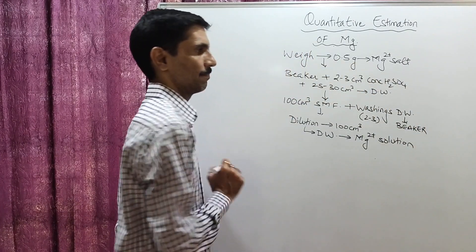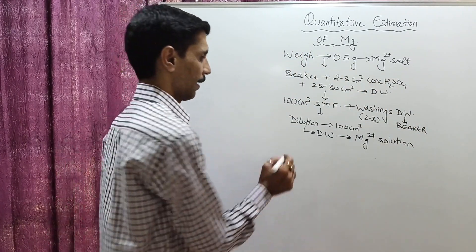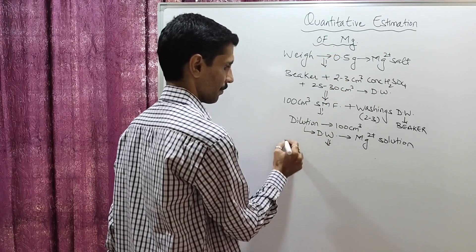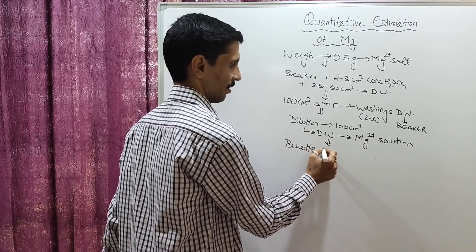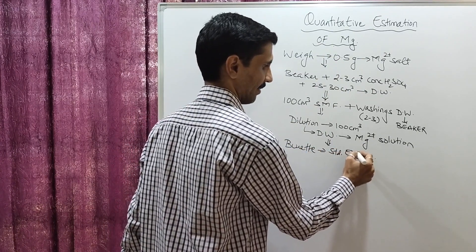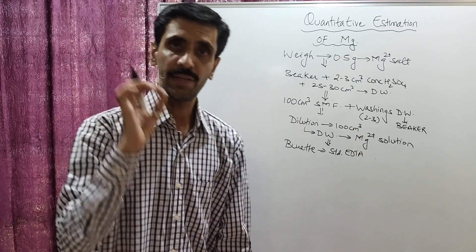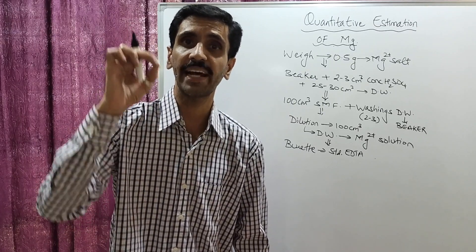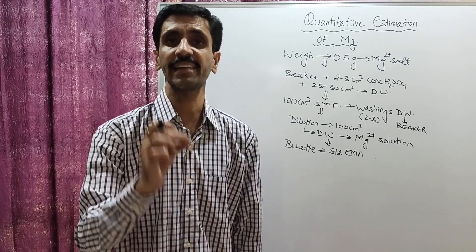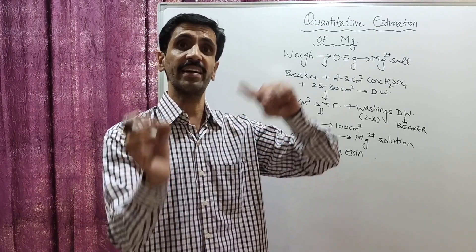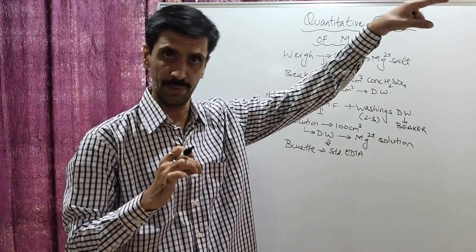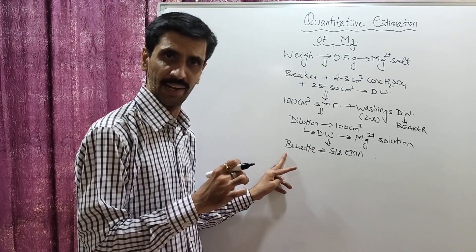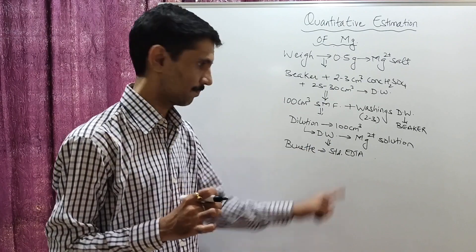Next step is filling the burette with standardized EDTA. Standardized EDTA means you already know its concentration before carrying out the titration — the EDTA has been standardized previously using zinc sulfate. Rinse the burette with the EDTA solution, then fill it up to the 0 mark with the standard EDTA.